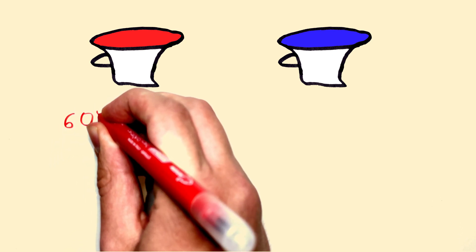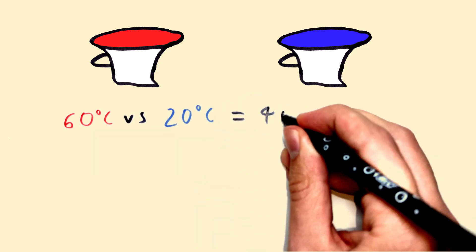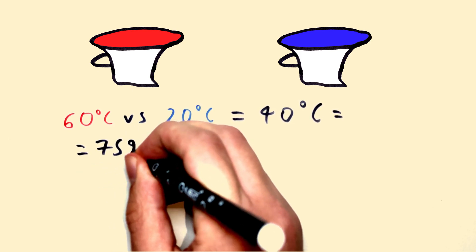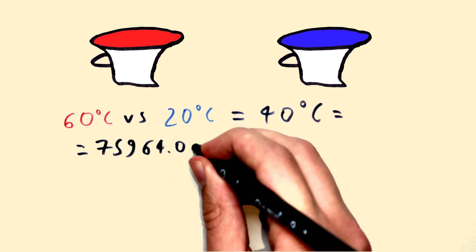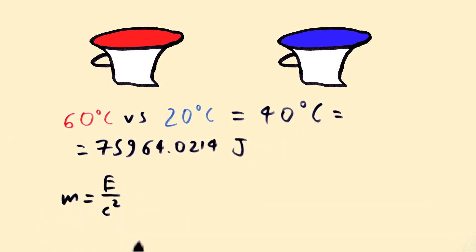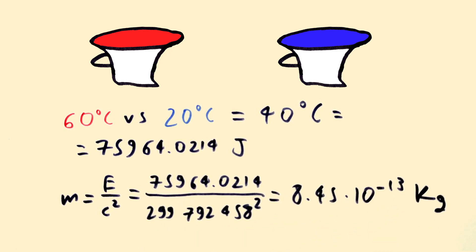60 degrees Celsius versus 20 degrees Celsius. That's a 40 degrees Celsius difference, which is 75,964 joules of energy. M equals E over c squared. And that means not very big of a difference. That's why the amount of matter is good, but just not perfect.